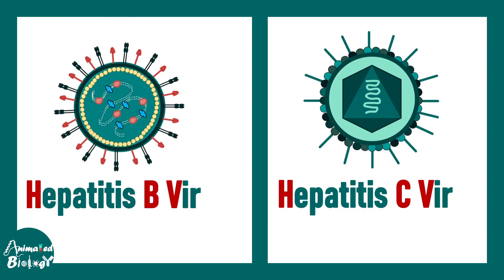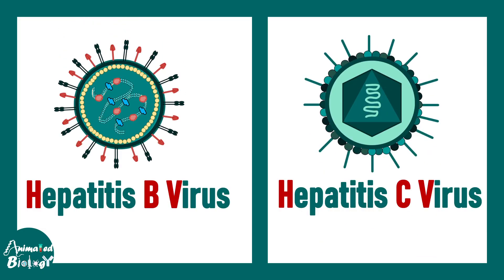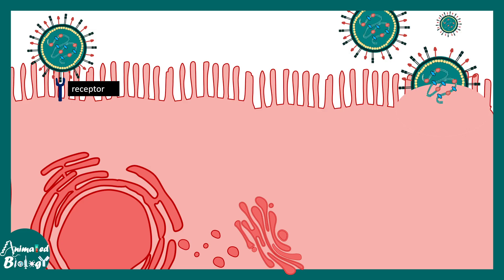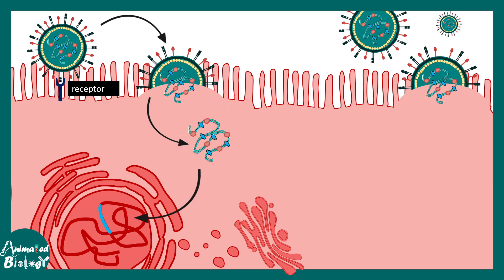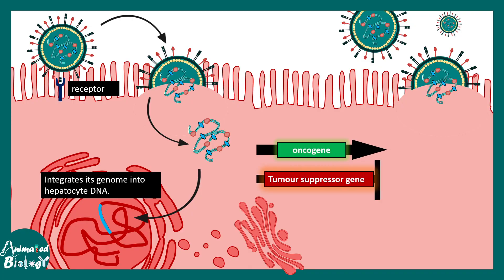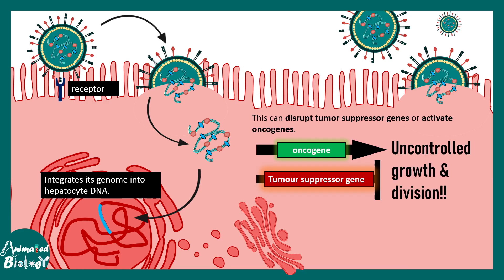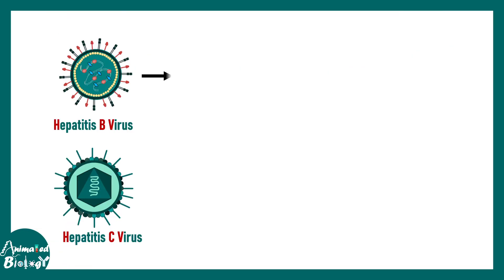Next we talk about hepatitis B virus and hepatitis C virus, both associated with carcinoma. Hepatitis B virus can integrate its genome into the host genome, and this integration leads to activation of several oncogenes and repression of many tumor suppressor genes, the consequence of which is uncontrolled growth and division leading to cancer.